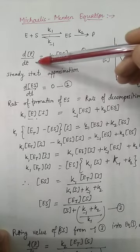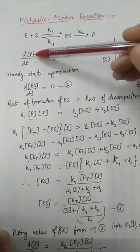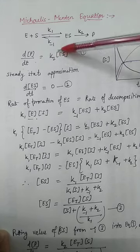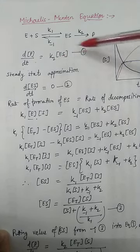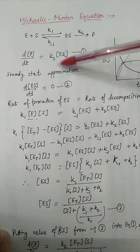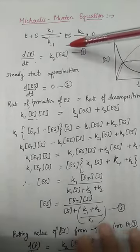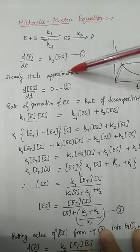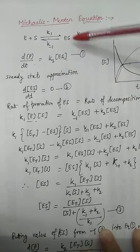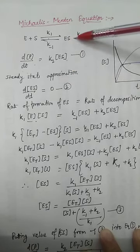The rate of reaction can be expressed as the rate of formation of product with respect to time, which becomes K2 times the enzyme-substrate concentration. However, we do not know the enzyme-substrate complex concentration, so we apply the steady-state approximation to the concentration of the enzyme-substrate complex.